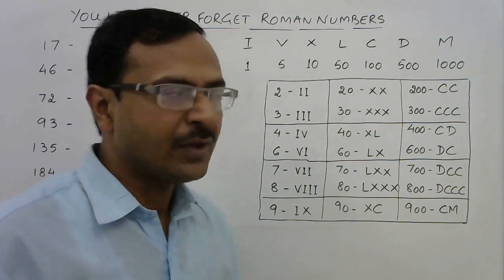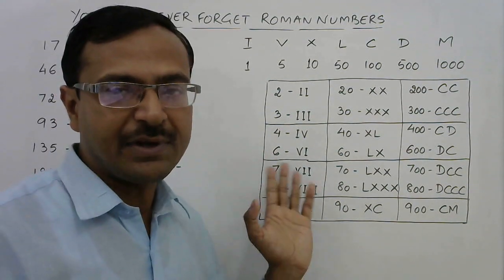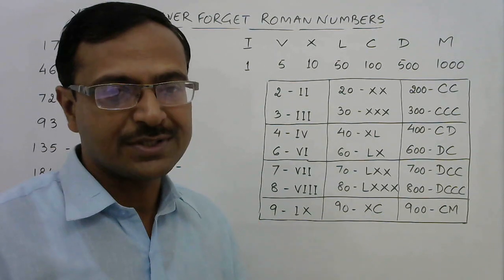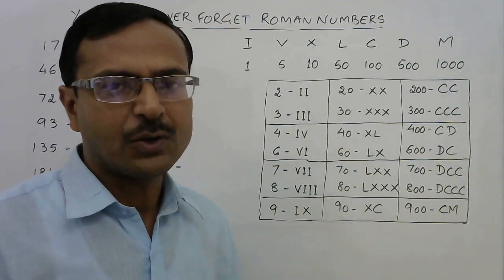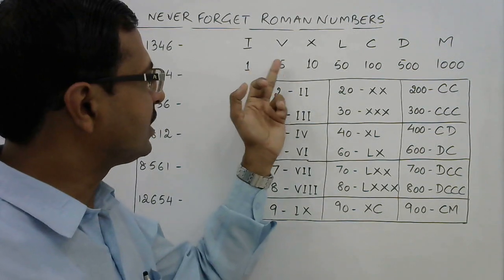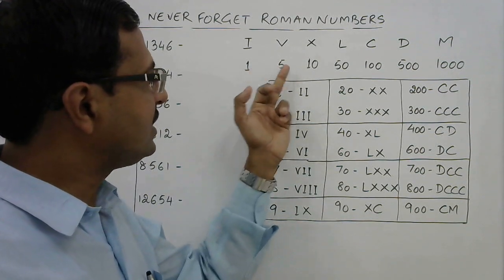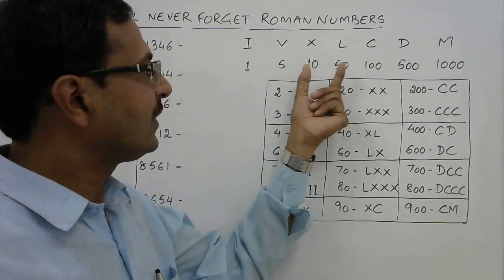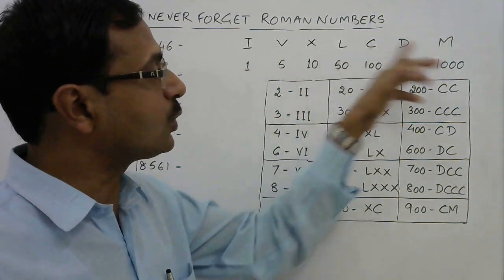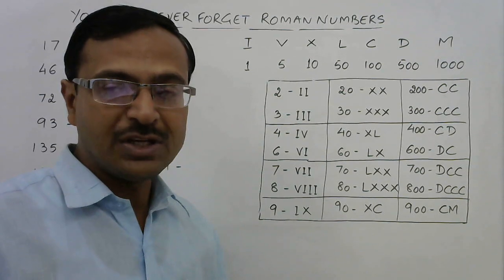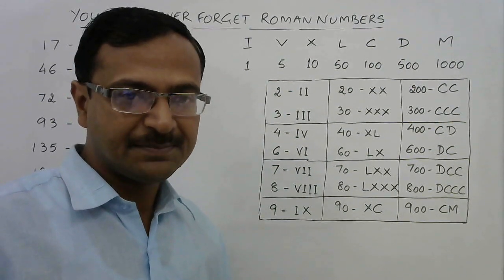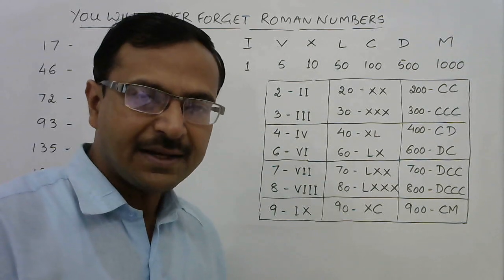You can see a pattern in these values: 1, 5, then add a zero to get 10, 50; add one more zero to get 100, 500; and one more zero gives 1000. This is how we remember these seven alphabets.